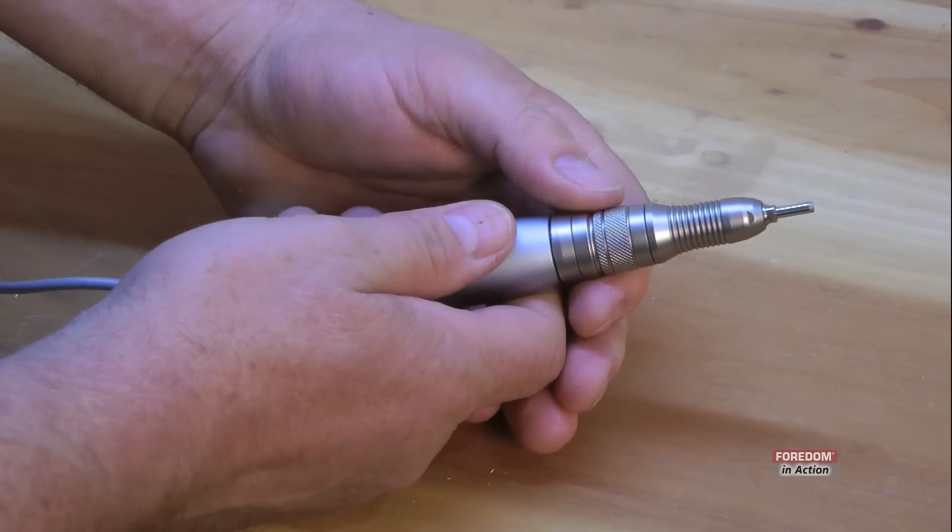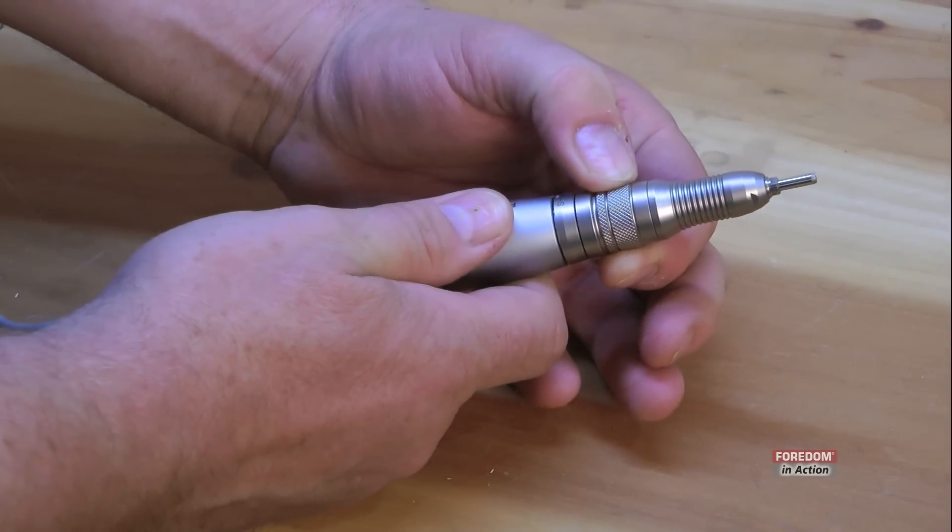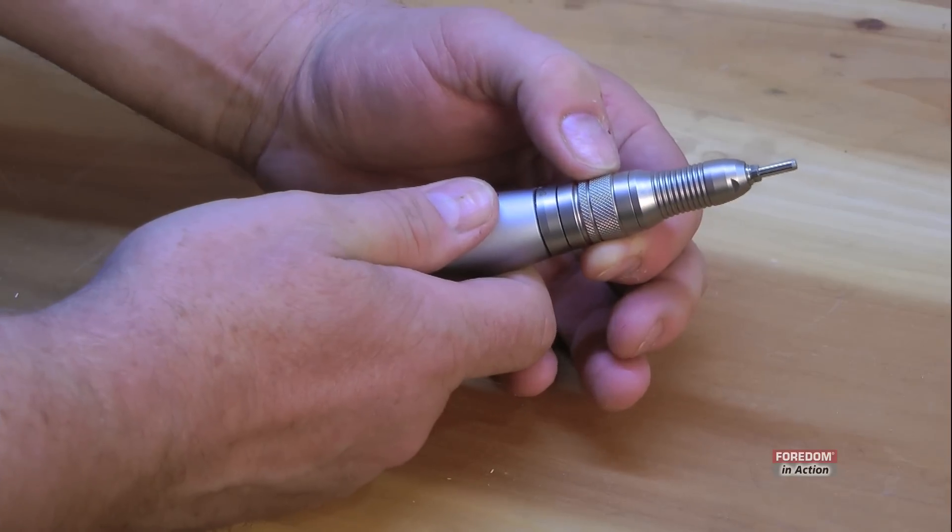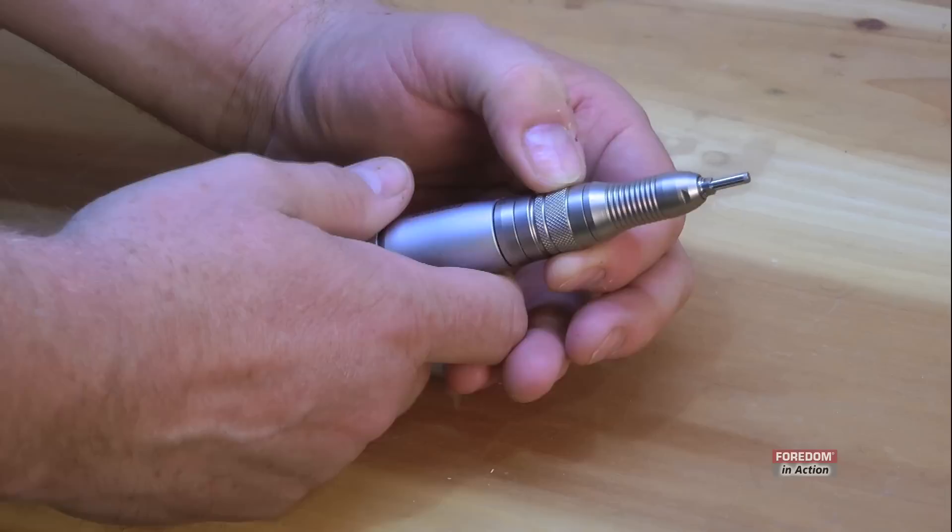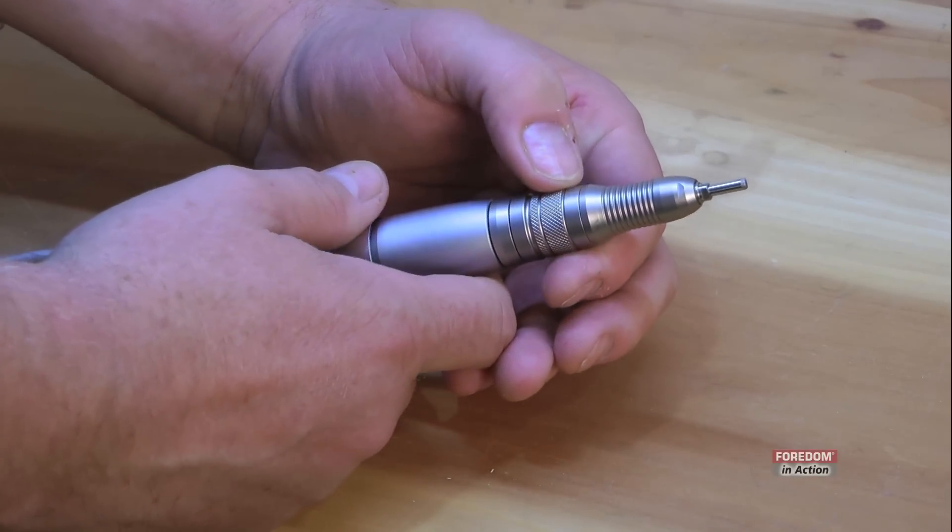One thing you don't want to do is loosen and take off this knurled ring. If you do, there's two small one millimeter ball bearings that need to be replaced and you need a special tool that we only have in the factory to replace them.